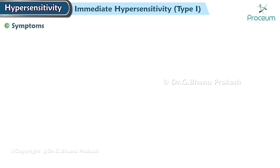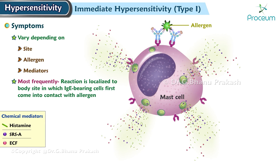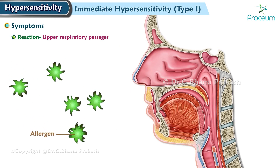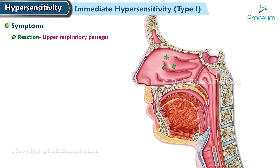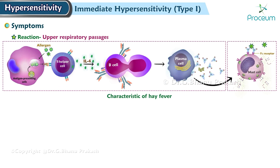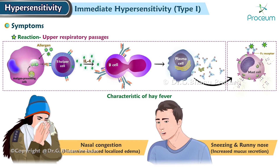Now for the symptoms of immediate hypersensitivity. Symptoms vary depending on the site, the allergen, and the mediators involved. Most frequently, the reaction is localized to the body site in which the immunoglobulin-bearing cells first come into contact with the allergen. If the reaction is limited to the upper respiratory passages after a person inhales an allergen such as ragweed pollen, the released chemicals bring about the symptoms characteristic of hay fever — for example, nasal congestion caused by histamine-induced localized edema, and sneezing and runny nose caused by increased mucus secretion.